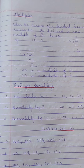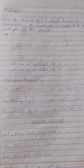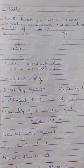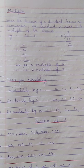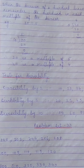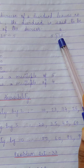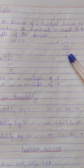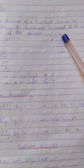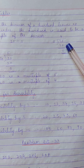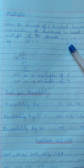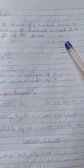Hello children, today we start with the next topic: multiples. When the division of a dividend leaves no remainder, the dividend is said to be a multiple of the divisor. For example, 20 divided by 5 gives 4 with remainder 0. So 20 is called the dividend, 5 is the divisor, 4 is the quotient, and the remainder is 0. When the remainder is 0, the dividend is a multiple of the divisor.